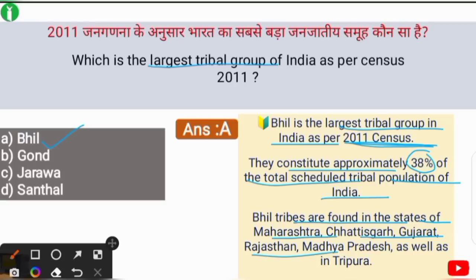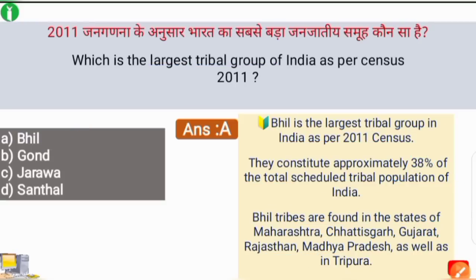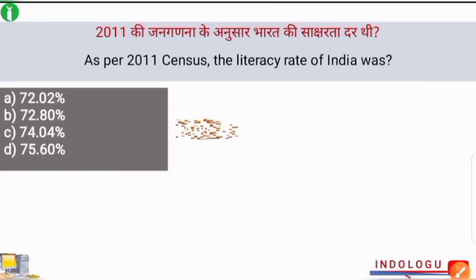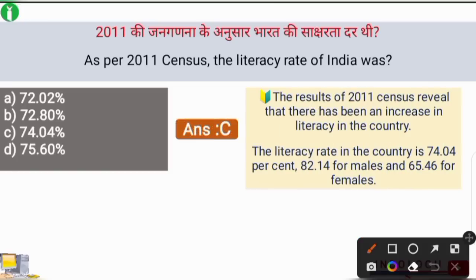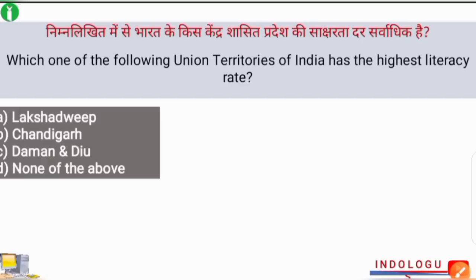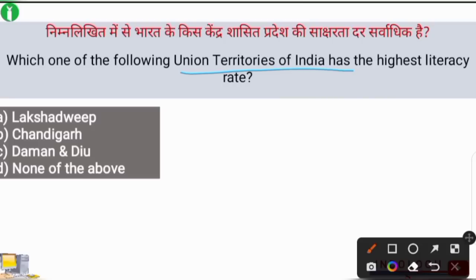Next question: as per the census of 2011, the literacy rate of India was — the correct answer is option C — 74.04%. The 2011 census results revealed an increase in literacy. The literacy rate is 74.04%, with 82.14% for males and 65.46% for females.